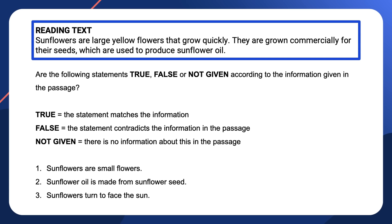Let's read the passage. It says: sunflowers are large yellow flowers that grow quickly. They are grown commercially for their seeds, which are used to produce sunflower oil. Now let's look at the statements. Question one says sunflowers are small flowers, but the passage says they are large flowers. Question one is clearly false as it contradicts the information in the text.